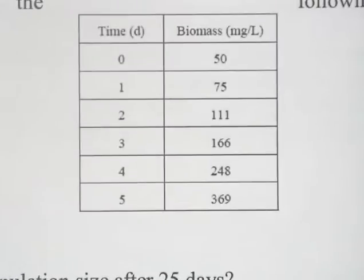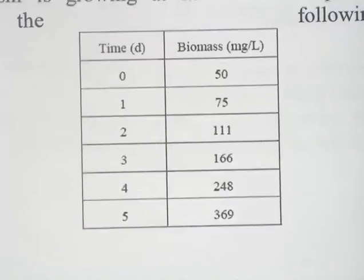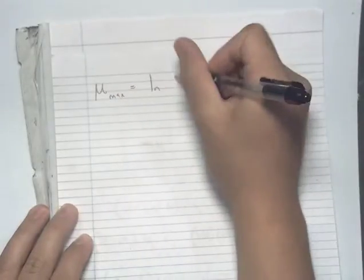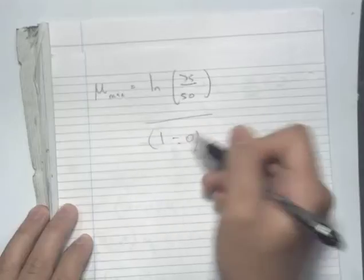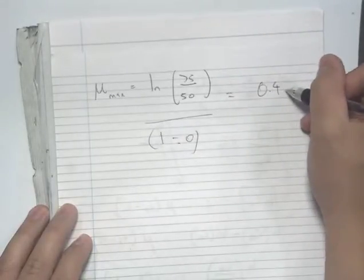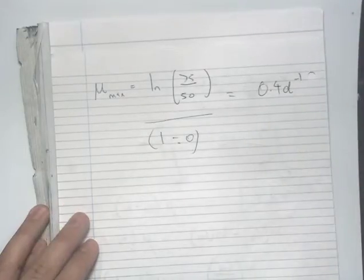As the cells are growing at our maximum specific growth rate, we can use any set of corresponding values from this table to solve this problem. So we'll use our time limits at 0 and 1 day, and our corresponding biomass concentrations of 75 mg/L and 50 mg/L. So mu_max is equal to ln(75/50) divided by (1 minus 0), and this gives us 0.4 days⁻¹ for our maximum specific growth rate.